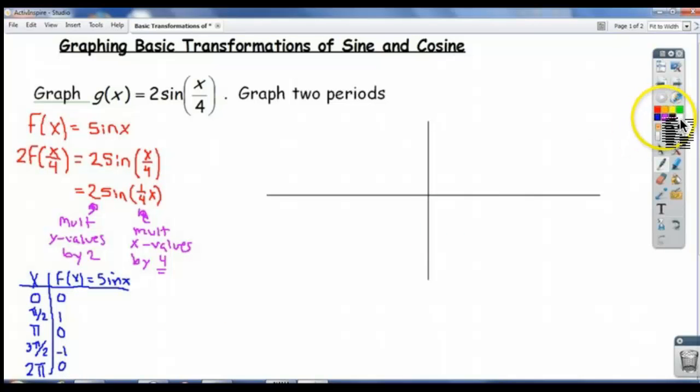So now let's just make our new table for g(x). We're going to multiply the y values by 2. So that means it's going to be 0, 2, 0, negative 2, 0.